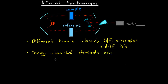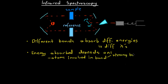The energy absorbed by a bond depends on the atoms involved in the bond, and this can manifest itself in a variety of ways. For example, through the strength of the bond — a stronger bond will absorb higher energy. And if the atoms involved in the bond are heavy, then this bond will absorb lower energy.